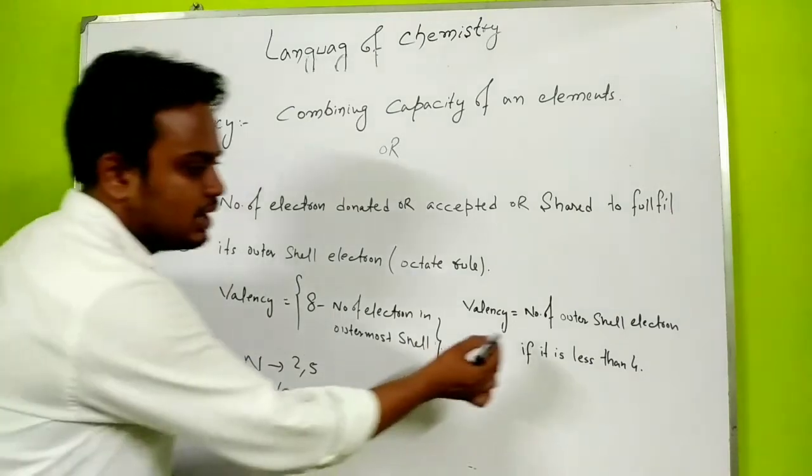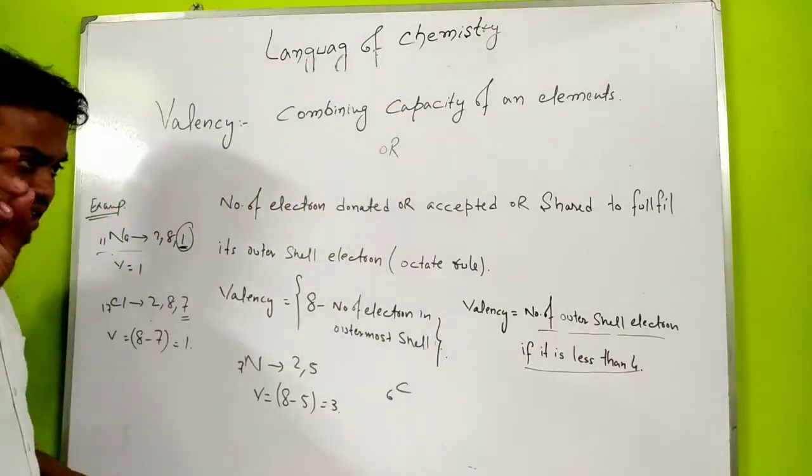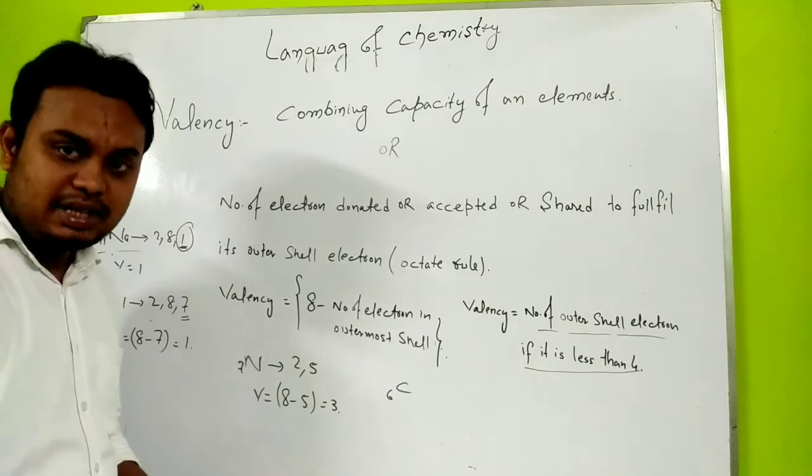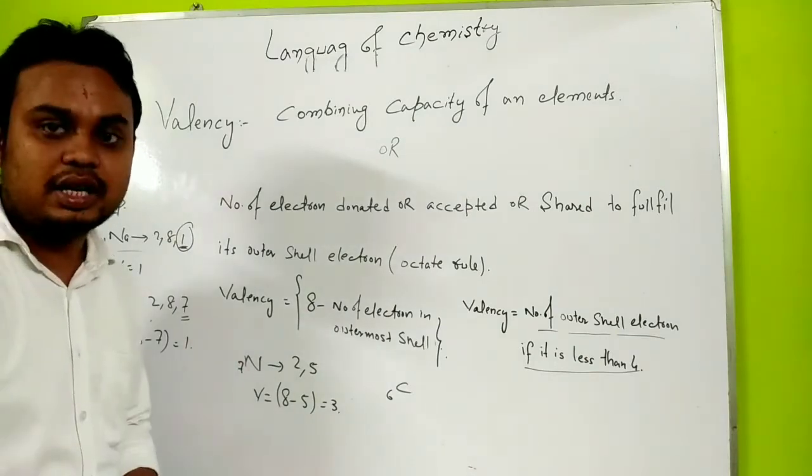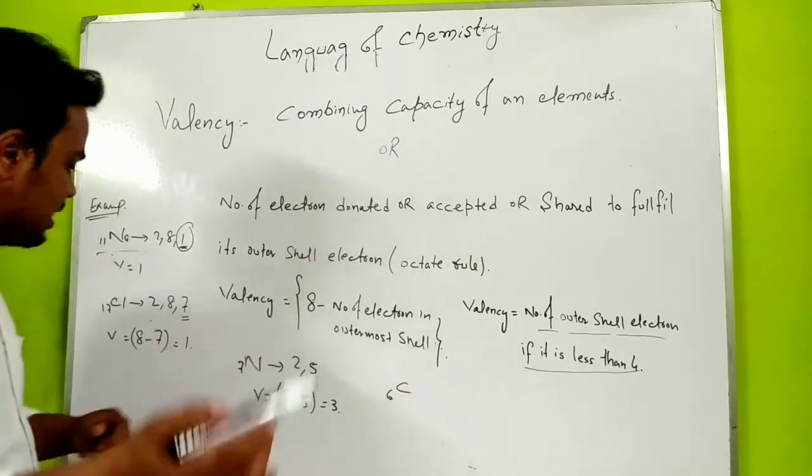If it contains number of outer shell electrons more than 4, then its valency is 8 minus that electron.